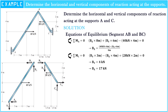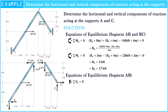After we got the values of Bx and By, our problem is easier than before. Now, let's apply the force equilibrium equations about segment AB. The sigma of forces on the y-axis is equal to zero, so 4 kN minus AY is equal to zero; hence AY is equal to 4 kN. The sigma of forces on the x-axis is equal to zero, so 40 kN minus AX minus 17 kN is equal to zero; hence AX is equal to 23 kN.